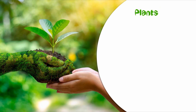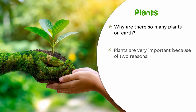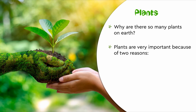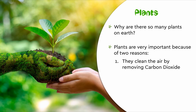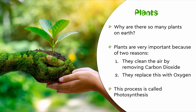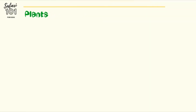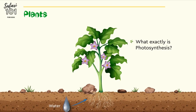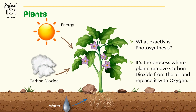Why are there so many plants on Earth? Plants are very important because of two reasons. They clean the air by removing carbon dioxide and they replace it with oxygen. This process is called photosynthesis. Photosynthesis is the process where plants remove carbon dioxide from the air and replace it with oxygen.